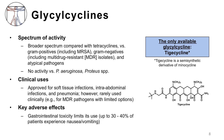Very briefly, the glycylcyclines are mentioned here for completion, but they are rarely used in everyday clinical practice. I consider them a subclass of the tetracyclines. Only one member of this class is available: tigecycline, which is structurally a close cousin of minocycline and older tetracyclines. It is very broad spectrum. Regarding clinical uses, it is FDA-approved for skin and soft tissue infections, intra-abdominal infections, and pneumonia. However, it is rarely used clinically — for example, in the treatment of infections caused by carbapenem-resistant Enterobacteriaceae, or CRE.